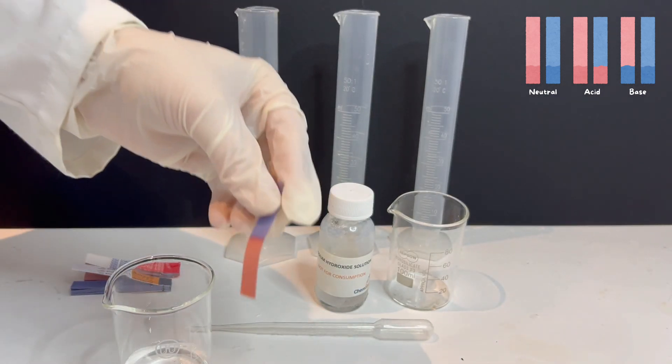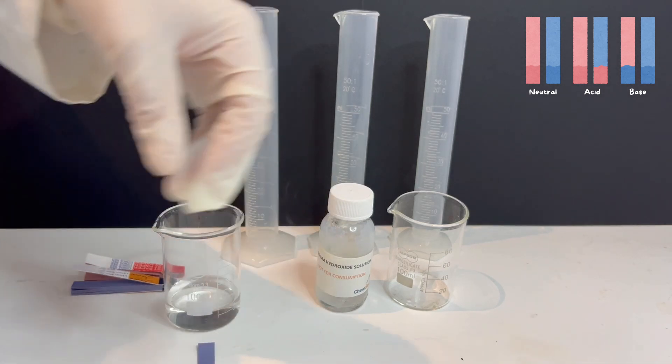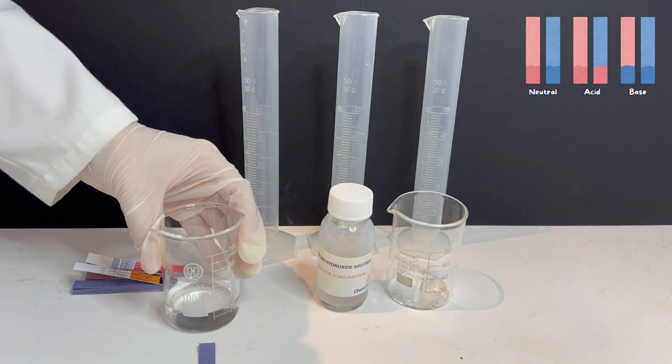The color change happens because acids increase the concentration of hydrogen ions in the solution and these ions cause the blue dye in the litmus paper to turn red.